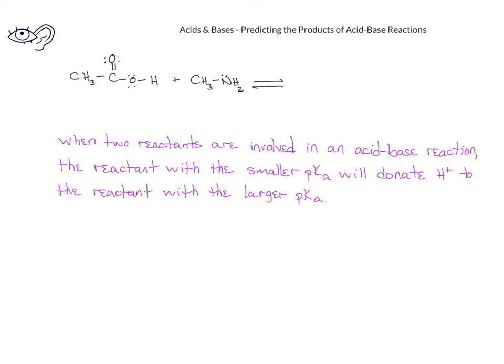In this reaction, you have acetic acid with a pKa of about 4, and methylamine with a pKa of about 40. When we look at these two compounds, since the acetic acid has a much smaller pKa, this compound will act as the acid.